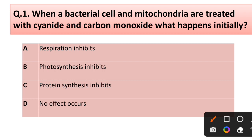Question number one: when a bacterial cell and mitochondria are treated with cyanide and carbon monoxide, what happens? Options: (a) respiration inhibits, (b) photosynthesis inhibits, (c) protein synthesis inhibits, (d) none — no effect occurs. Correct answer is option A: respiration inhibits.